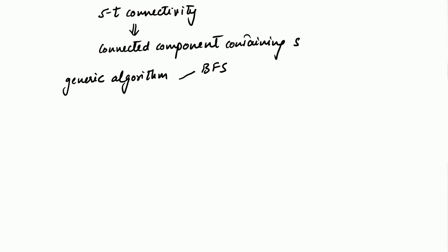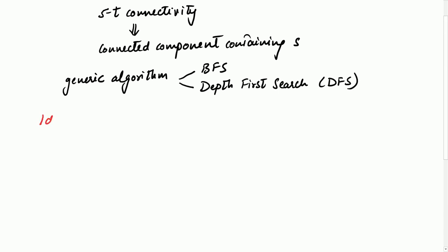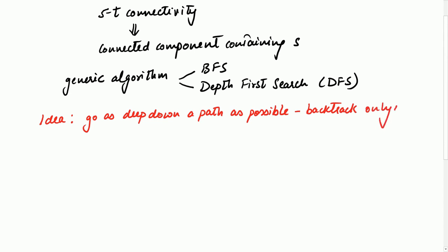Today we talk about another algorithm which is also based on this general algorithm — we call this the depth first search, or DFS in short. The fundamental idea behind depth first search is, as the name suggests, go as deep down a path as possible and backtrack only when necessary, which means you backtrack only when you encounter a dead end ahead of you.